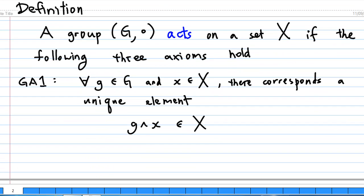First, let's look at the definition. A group G acts on a set X if the following three axioms hold. GA1: For every element g of G and every element x of X, there corresponds a unique element g cap x belonging to X.